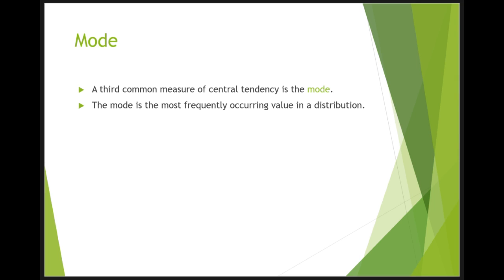A third and final commonly used measure of central tendency is the mode. The mode is the most frequently occurring value in a sample or a population. You can have more than one mode.